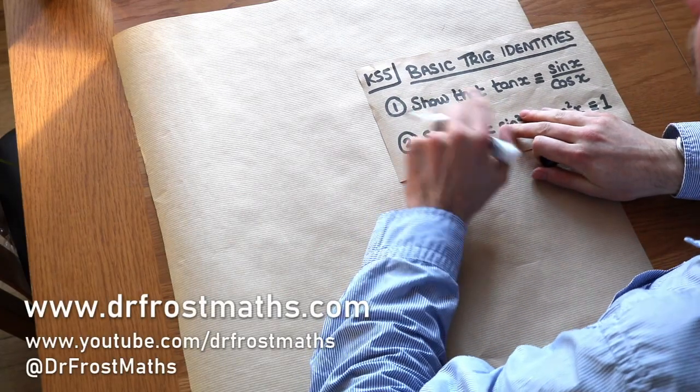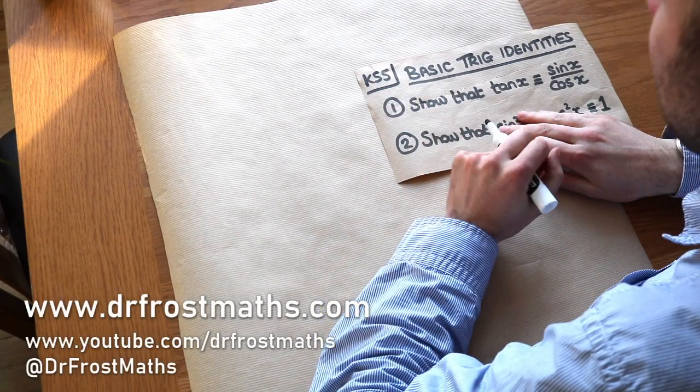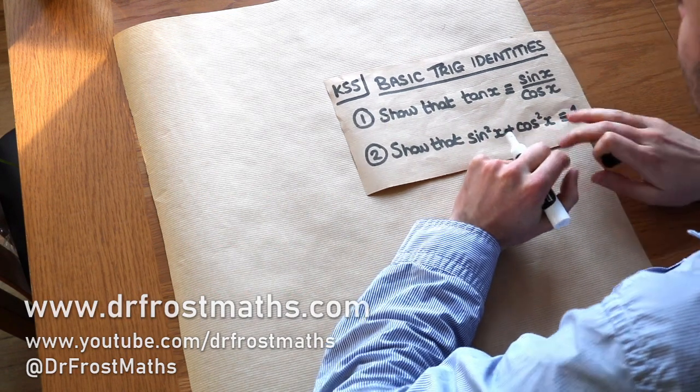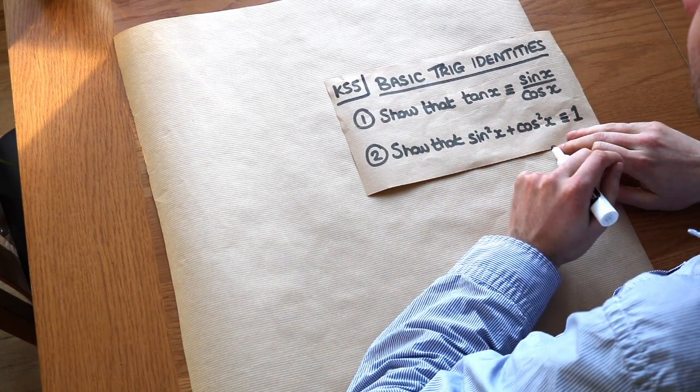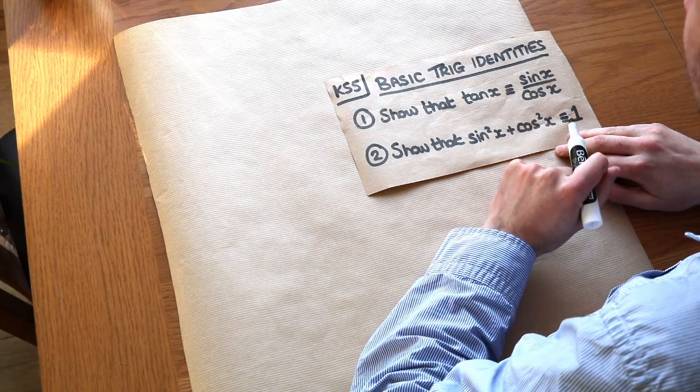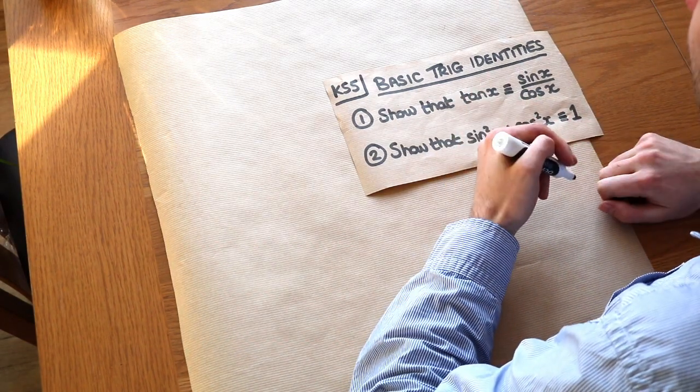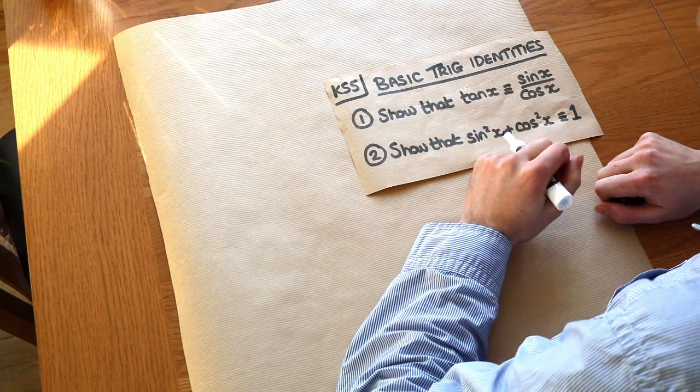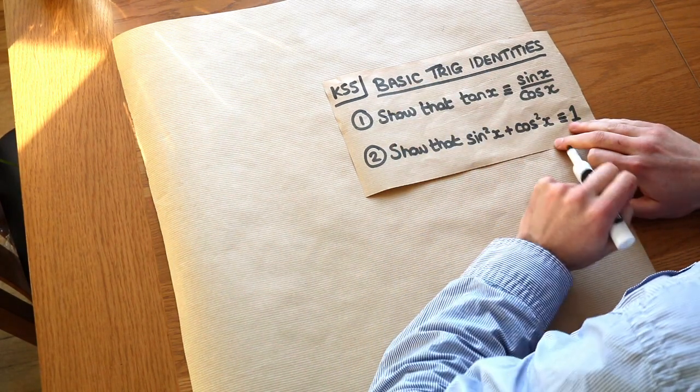Hello and welcome to this Dr. Frost Maths video on Key Stage 5 Basic Trigonometric Identities. We're going to be exploring and proving two key trigonometric identities in this video. There are other trigonometric identities as well, involving things like cosec, sec, and cot, but we'll explore those in a different video and just cover the two most basic ones here.